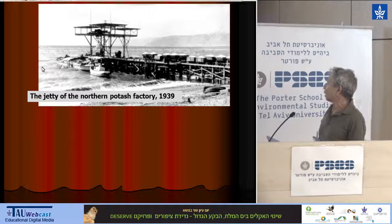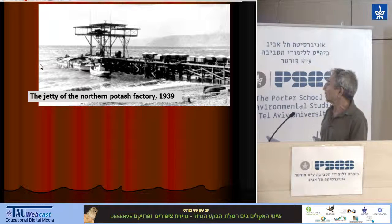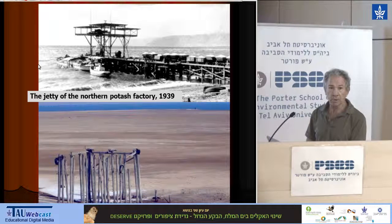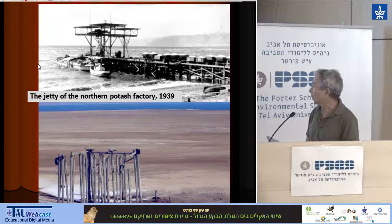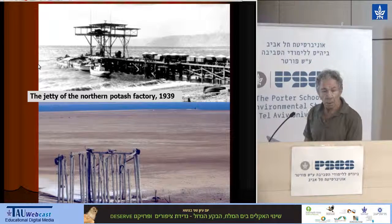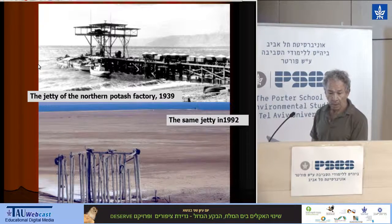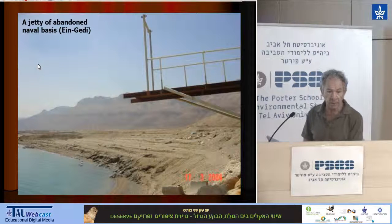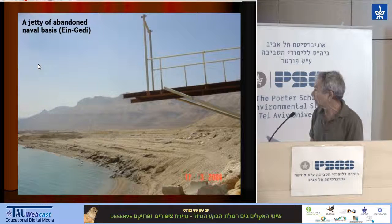Just to see the impact: here is a picture from 1939 of the jetty at the northern tip of the Dead Sea — the Palestine Potash Factory. And here is a picture I took about 60 years later of the same jetty, and you can see where the water line was — not today, but 25 years ago. Another example is the jetty of a naval base in Ein Gedi, now of course abandoned.